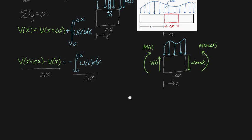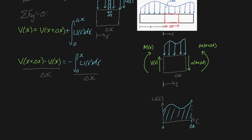We know that if we take the limit as delta x approaches 0, then we're going to get dv/dx on the left hand side. But what is the right hand side term? It's a pretty complicated thing to grasp, so let's do it step by step. Let me redraw our distributed load varying with epsilon — this is epsilon, and this is our distributed load w of epsilon. What is the total area under this curve from 0 to delta x? We know that the area under a curve is just the integral, so the area under this curve is the integral from 0 to delta x of w of epsilon d epsilon.